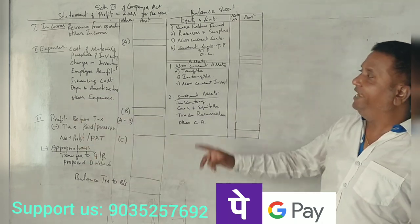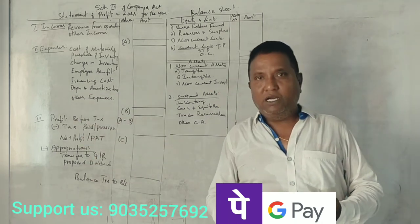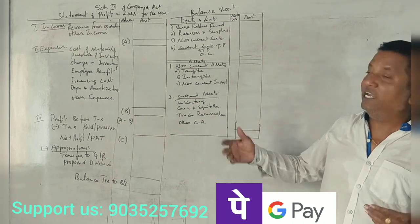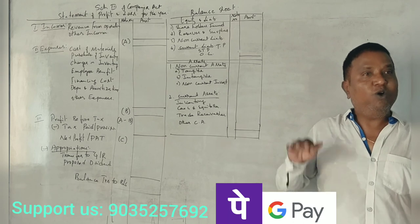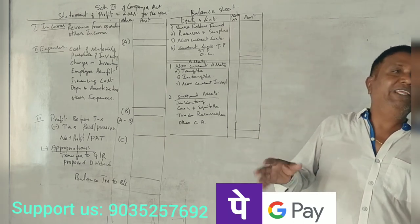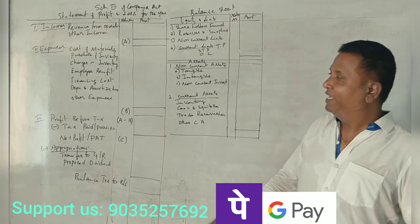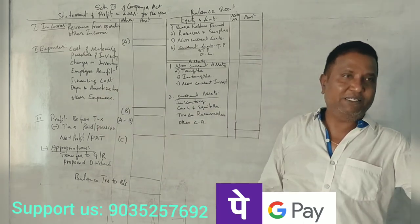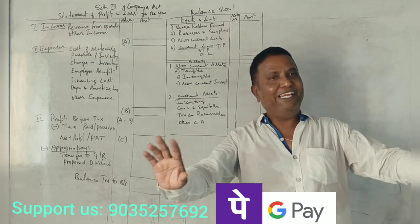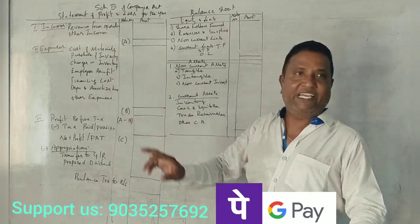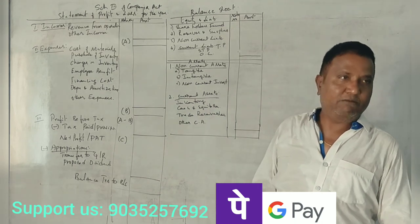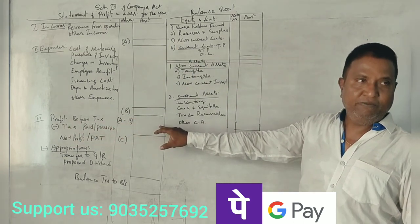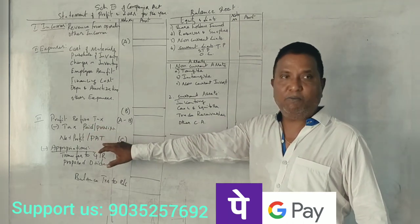Next is depreciation and amortization. Intangible assets — goodwill, patents, trademarks, copyrights — all of these are intangible, and their write-off is called amortization. Items 1 to 6 are listed, and the 7th is other expenses. So: total income minus total expenses equals profit before tax; tax is deducted; net profit is profit after tax.